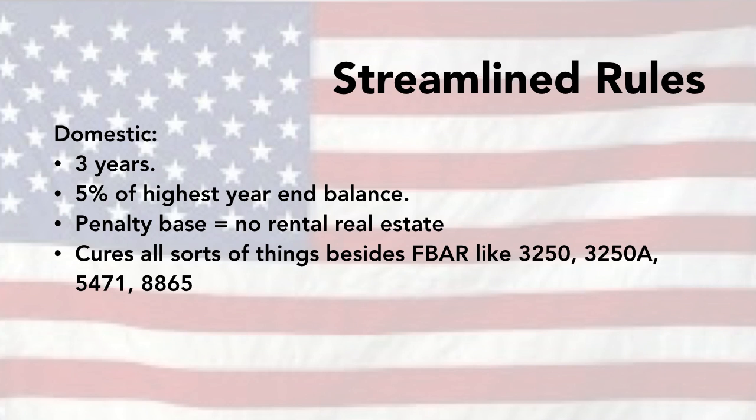Now let's talk about the streamlined rules. If you are domestic — that is, you live in the United States — you have to amend your last three years of returns and will be penalized 5% of the highest year-end balance. One important thing to realize: unlike the standard OVDP, your penalty base does not include rental real estate, which is a huge win for some people. The streamlined will also cure all sorts of things besides missing FBARs, like Forms 3250, 3250A, 5471 for corporations, and 8865 for partnerships.